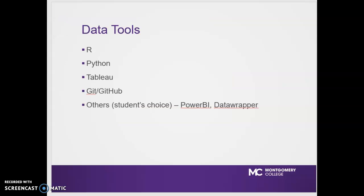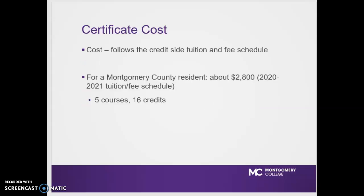The data tools we utilize are R, Python, Tableau, Git and GitHub, and students' other choices including Power BI and Data Wrapper. Many students will use SQL as well. The certificate cost follows the credit side tuition and fee schedule, so for a Montgomery County resident, it would cost about $2,800 for the five-course, 16-credit sequence for the data science certificate.